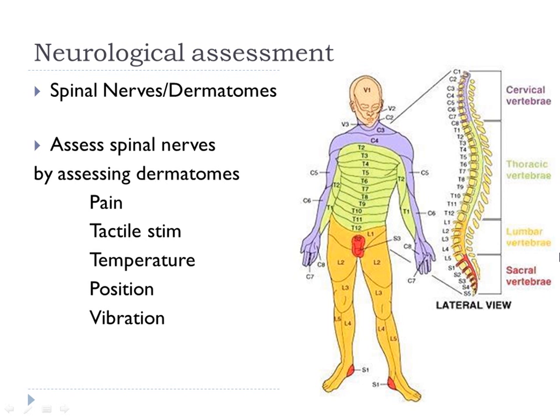Why would a spinal nerve dermatome assessment be important? We might do this for patients with a spinal cord injury. Sometimes a patient will be able to sense pain and tactile stimulus, but not temperature, position, or vibration. Sometimes they can move but they can't feel. Sometimes they feel but they can't move — it's just as if that part were not there.